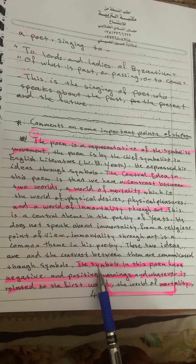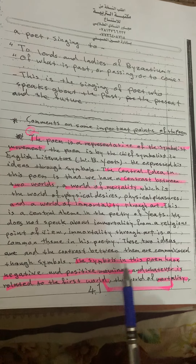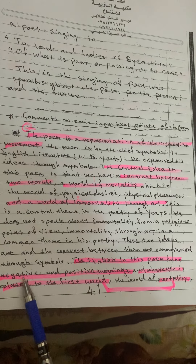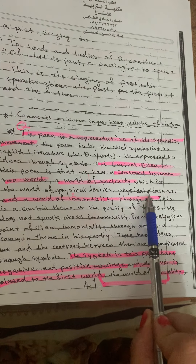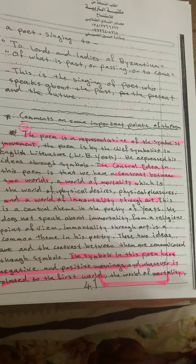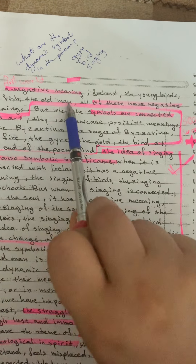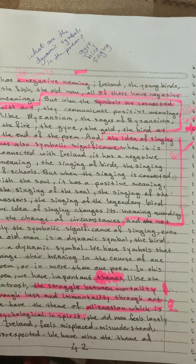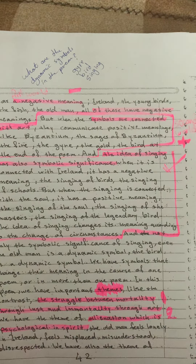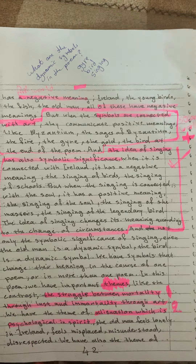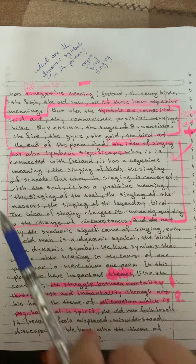If asked about symbols in the poem with negative meanings: those are related to the first world of physical desires. For example, in stanza one, he talks about the fish, the man, and everything related to his country Ireland — all of these carry a negative meaning.